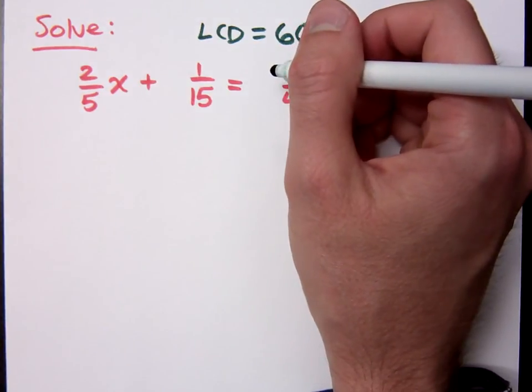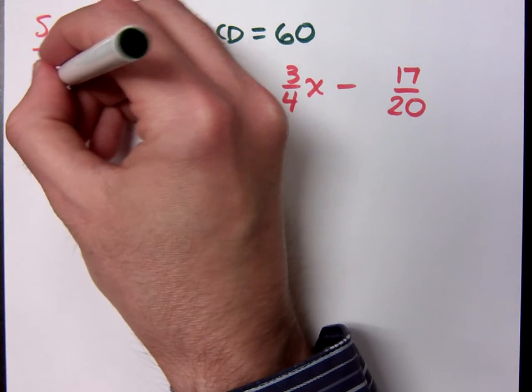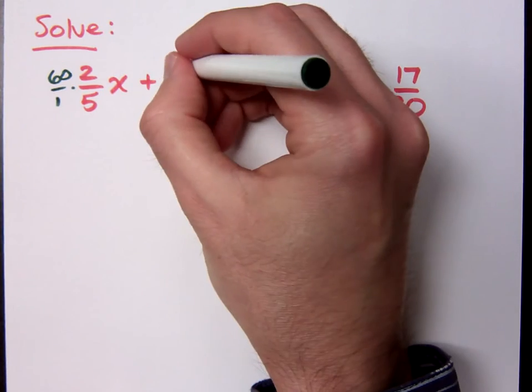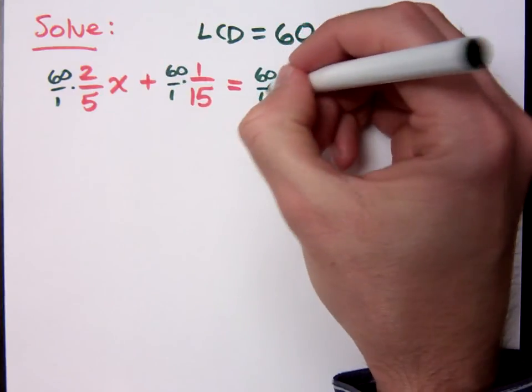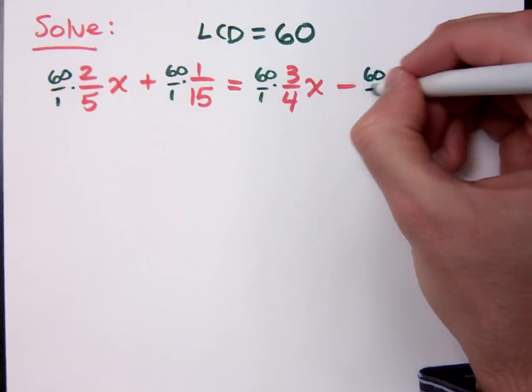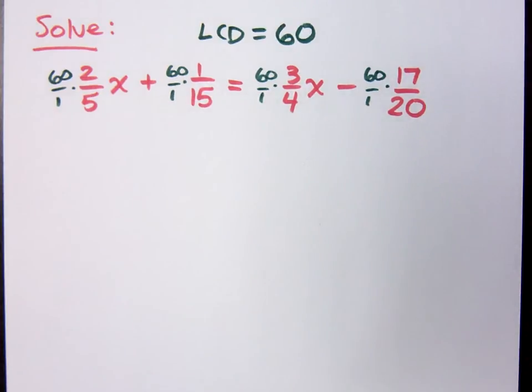I'm going to multiply by 60 over 1. All of those denominators that I have will reduce away when I multiply times the LCD.